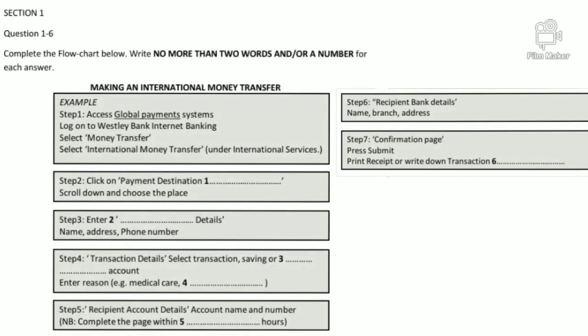You will hear a number of different recordings and you will have to answer questions on what you hear. There will be time for you to read the instructions and questions and you will have a chance to check your work. All the recordings will be played once only. The test is in four sections. At the end of the test you will be given 10 minutes to transfer your answers to an answer sheet. Now turn to section one. Section one: you will hear a telephone conversation between a bank representative and a client who wants to make an international money transfer. First you have some time to look at questions one to six.